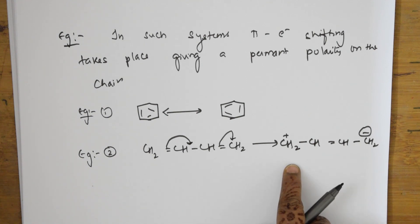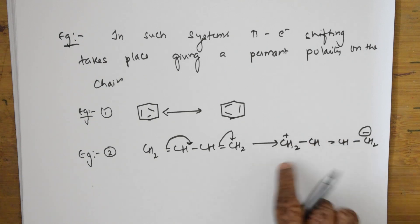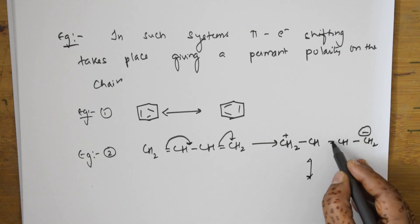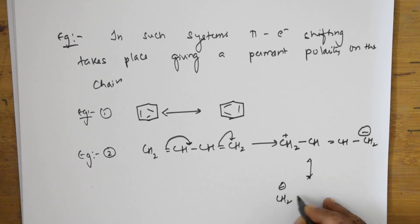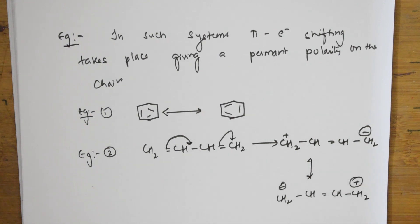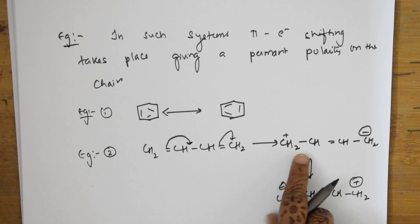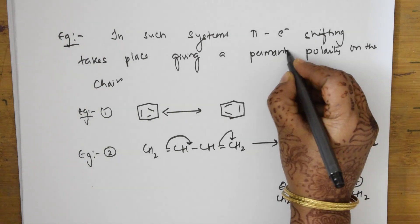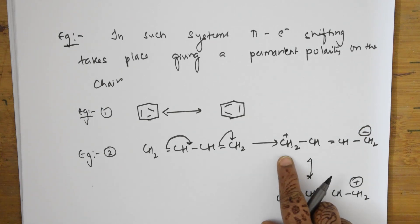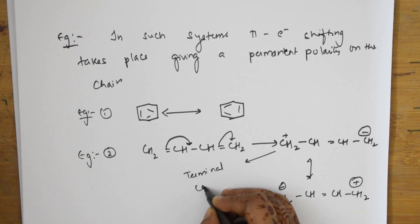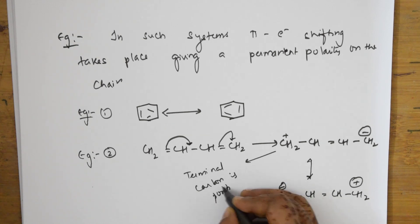What are you observing here? The terminal carbon, whichever it is, carries the positive charge. This is what is important — mesomeric effect gives permanent polarity. Whenever a molecule shows mesomeric effect, the terminal carbon is positive. Remember that.